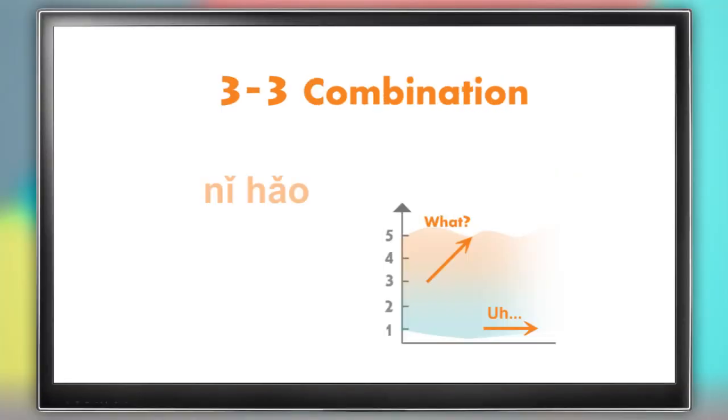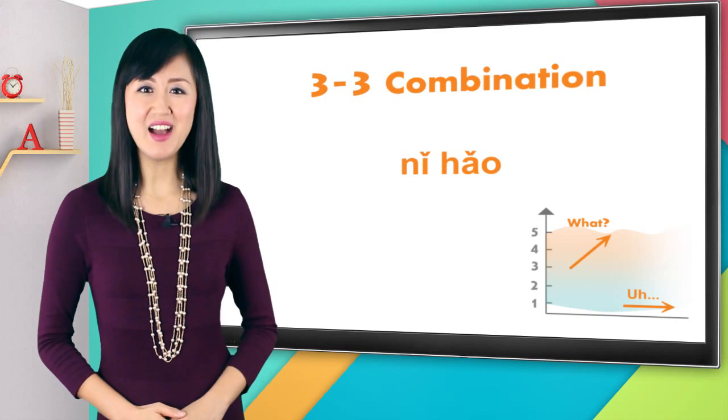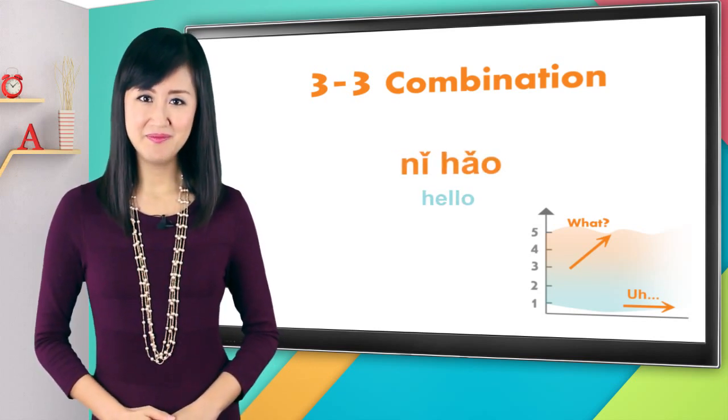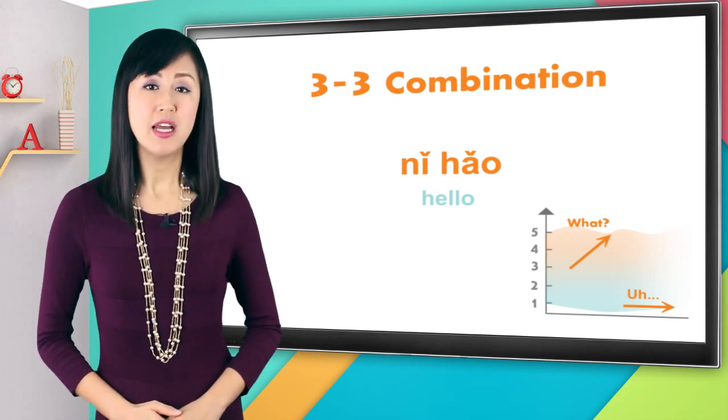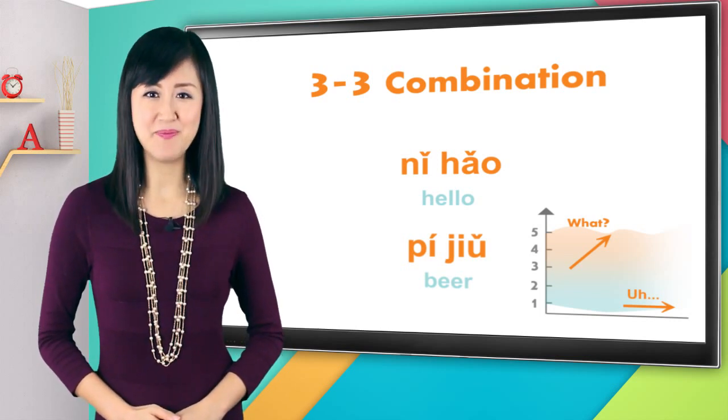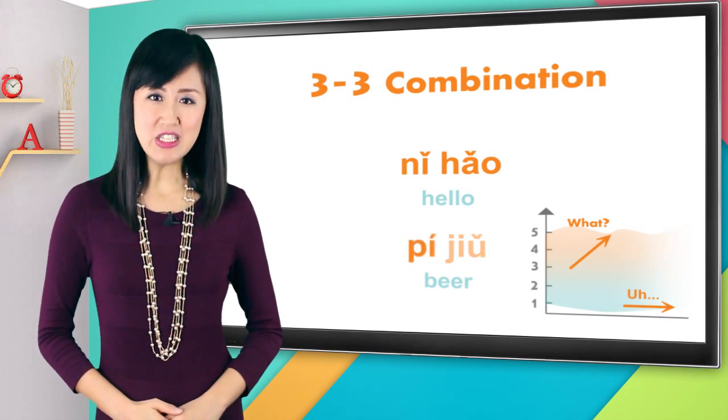The word to remember here is nǐ hǎo, what a, nǐ hǎo. I bet you already know that word, that's how you say hello in Chinese, nǐ hǎo. Notice that the tones sound exactly the same as the word pǐ jiǎu, which is our example word for the two three combination. Nǐ hǎo, pǐ jiǎu.